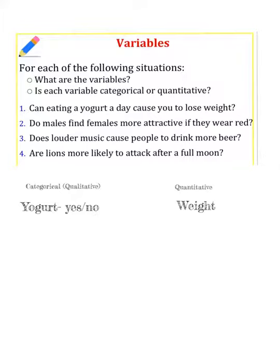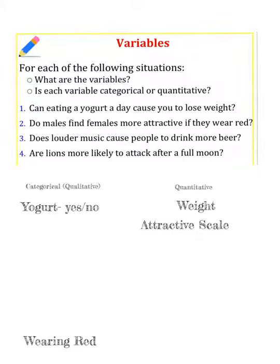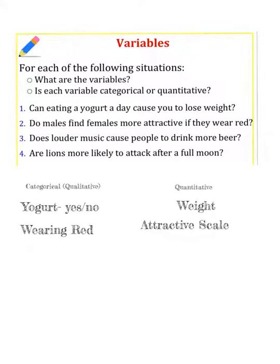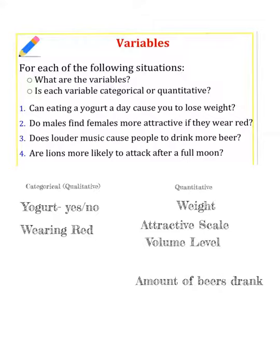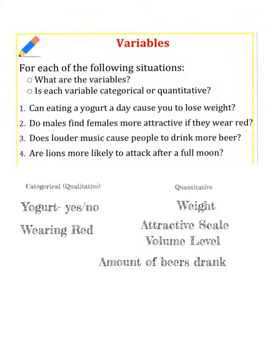Number two: do males find females more attractive if they wear red? The variables would be attractive scale and wearing red. Attractive scale would be quantitative because it's numerical, but wearing red would be a yes or no. Number three: does louder music cause people to drink more? The variables would be volume level versus the amount of beers drank. Volume level would be quantitative and the amount of beers drank would also be quantitative.